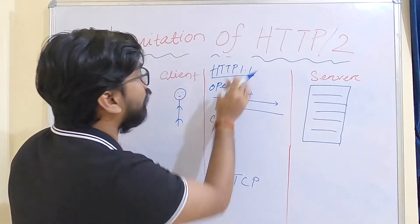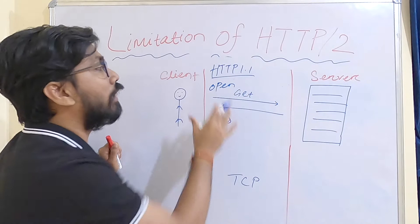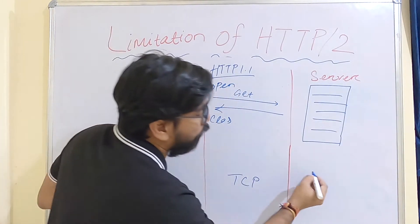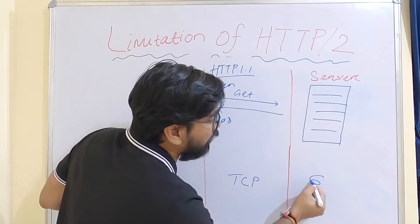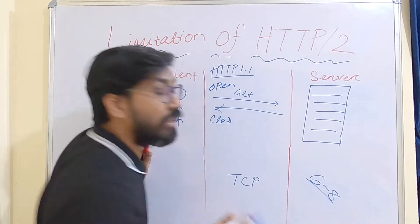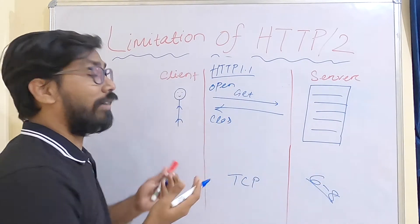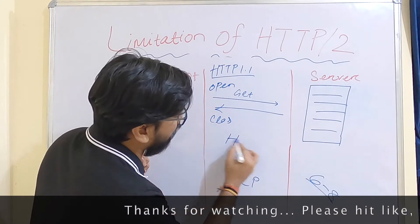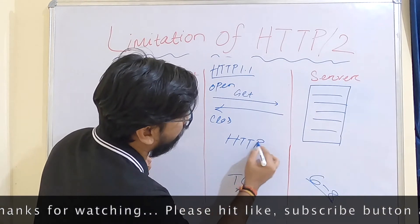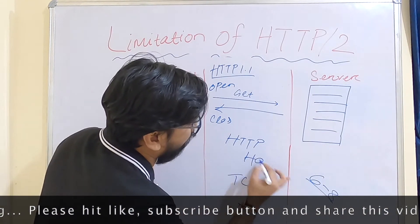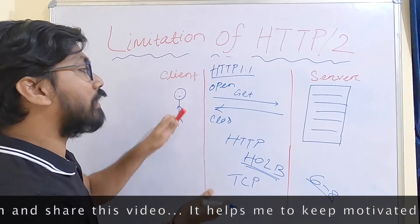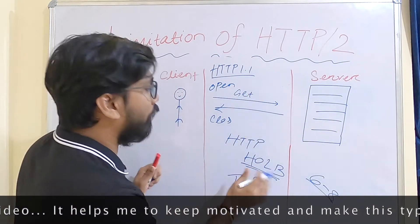This is how HTTP/1.1 is working. There's a hack in browsers - you can say six to eight requests at a time, but that is also a limitation. This limitation is called HTTP level head of line blocking.